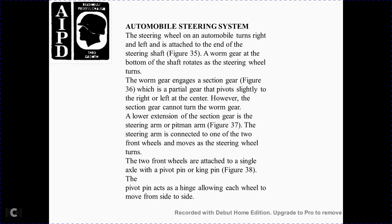In an automobile, the steering wheel is attached to the end of the steering shaft. At the bottom of the shaft, the worm gear rotates when the steering wheel turns. The section gear, which is a partial gear, pivots slightly to the right and left. The section gear drives the steering arm, also called the pitman arm, which connects to one of the two front wheels. The front wheels are attached to a single axle with a pivot pin, called the kingpin, which acts as a hinge allowing each wheel to move from side to side.